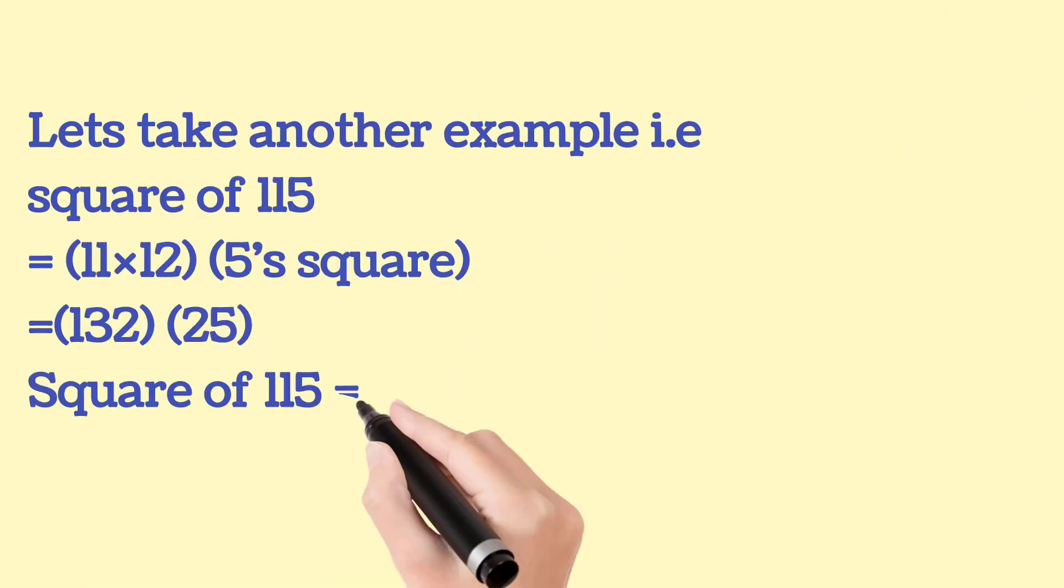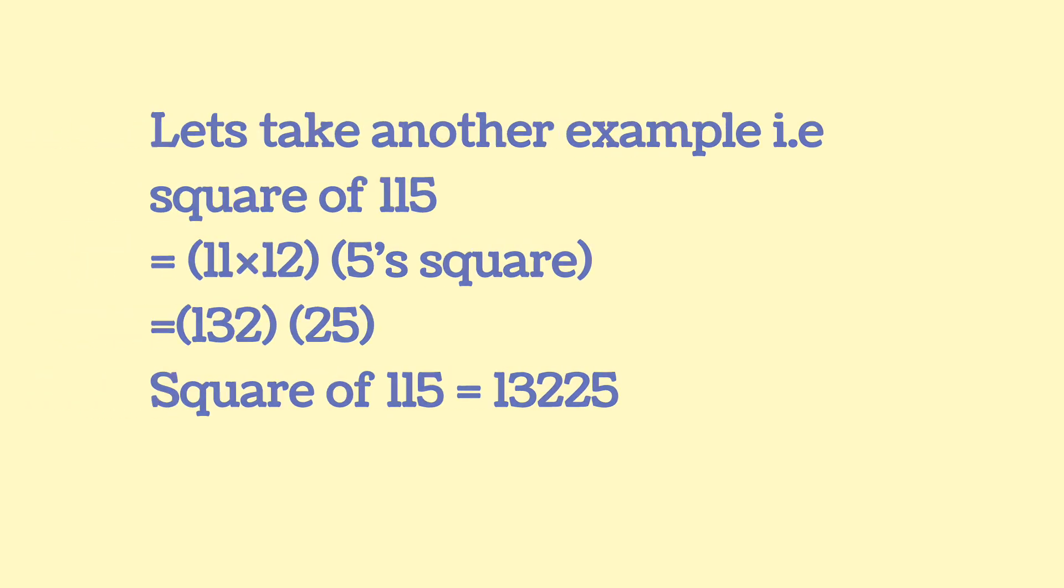Let's take another example, that is square of 115. 11's consecutive number is 12. 11 into 12 equals 132, and 5 square is 25. Therefore, square of 115 is 13225.